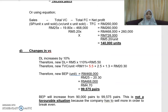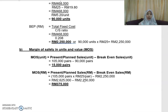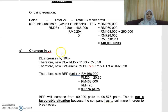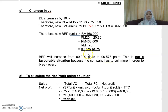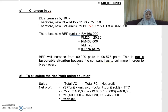Previously in Part (a) the break-even was 90,000 pairs, but now it increases to 99,575 pairs. This is not a favorable situation because instead of reaching break-even earlier, it now becomes later.